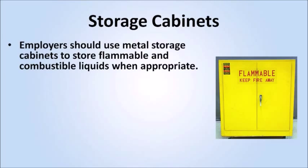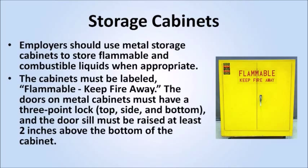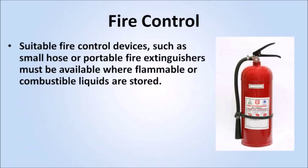Employers should use metal storage cabinets to store flammable and combustible liquids when appropriate. The cabinets must be labeled 'Flammable — Keep Fire Away.' The doors on metal cabinets must have a three-point lock — top, side, and bottom — and the door sill must be raised at least 2 inches above the bottom of the cabinet. Suitable fire control devices, such as small hose or portable fire extinguishers, must be available where flammable or combustible liquids are stored.